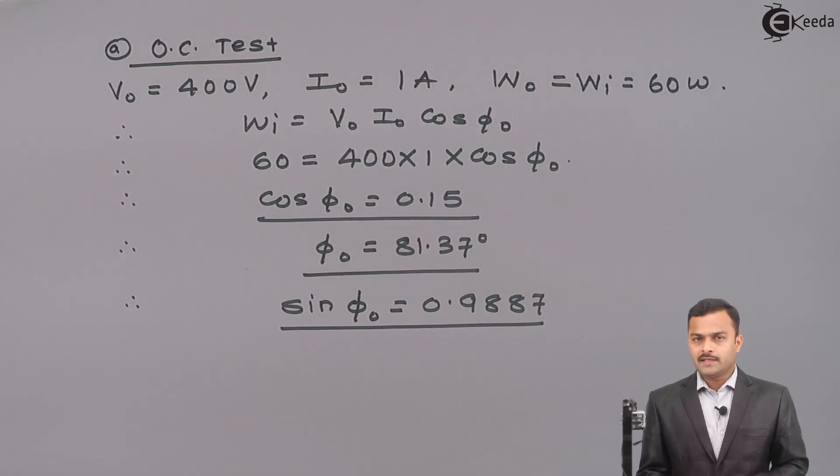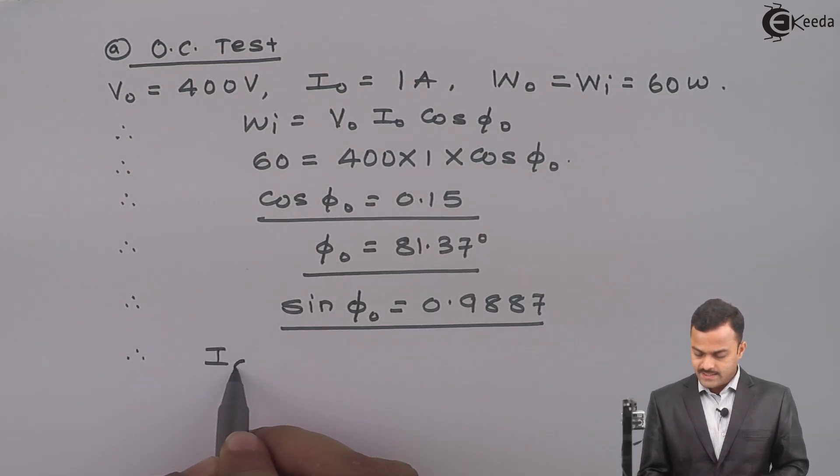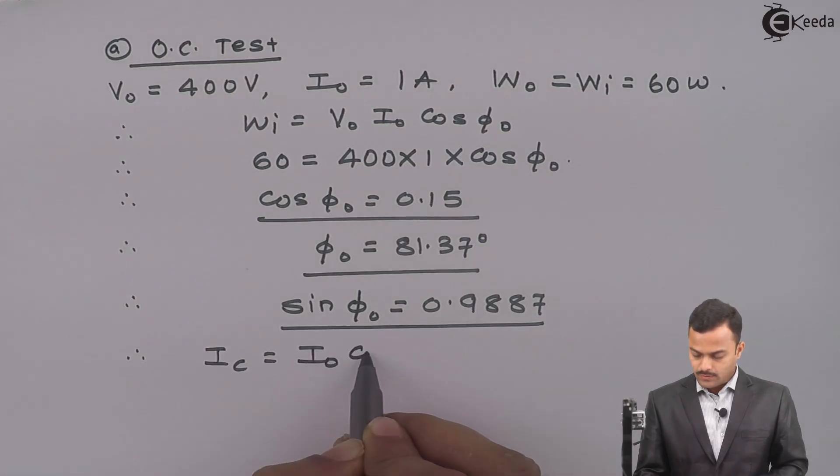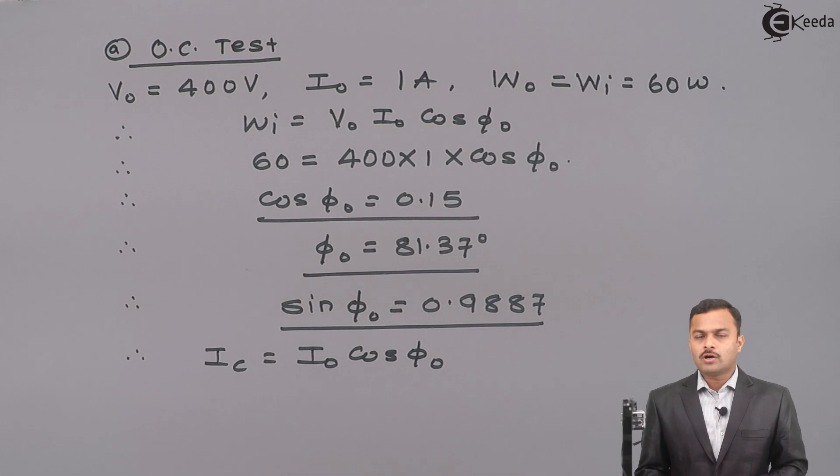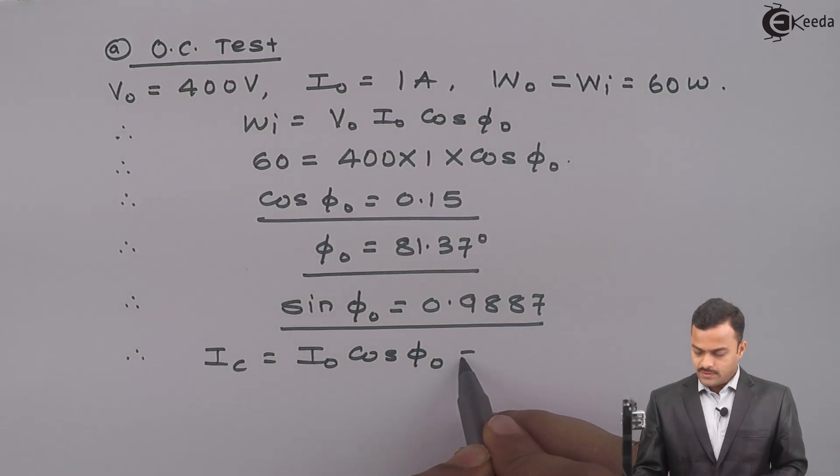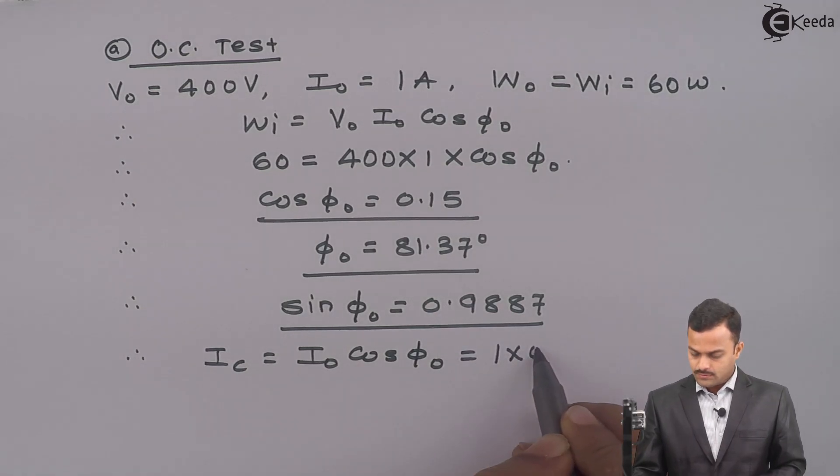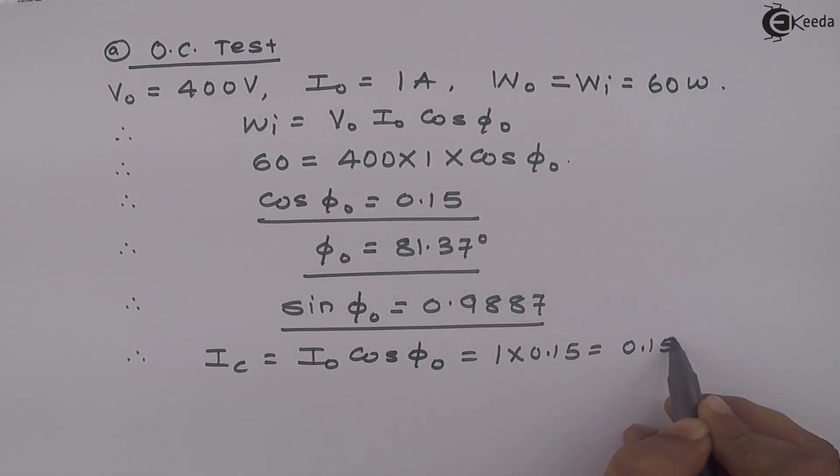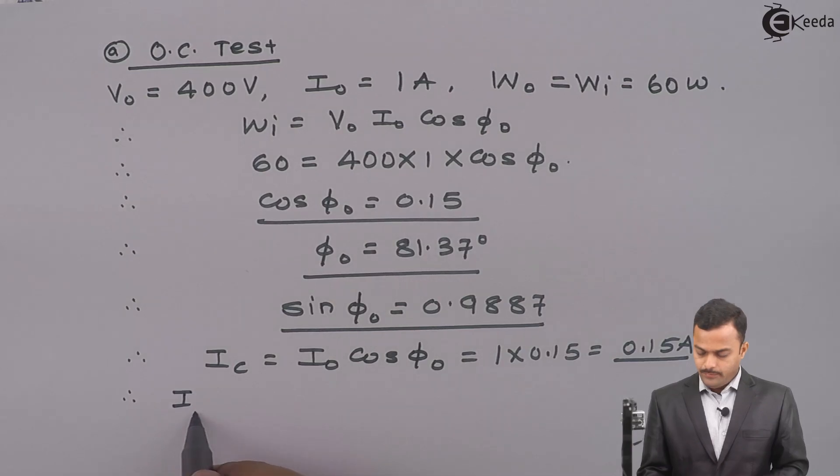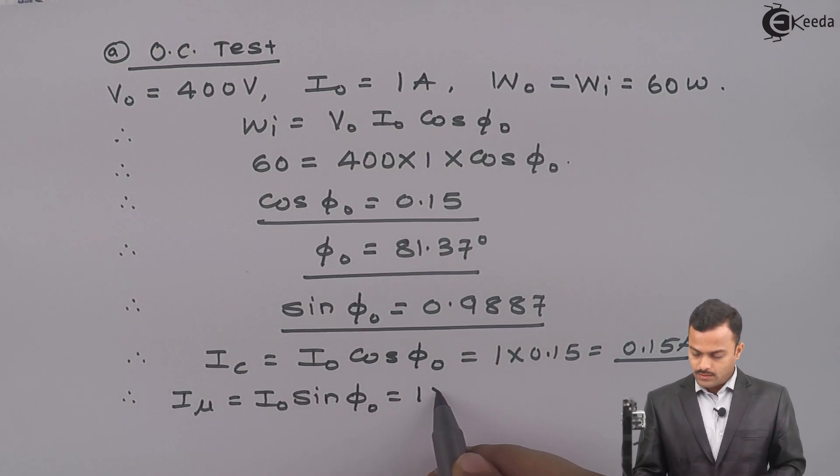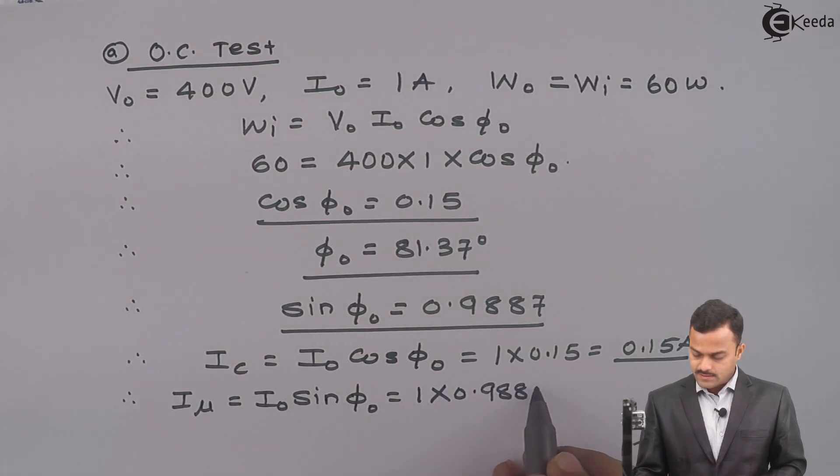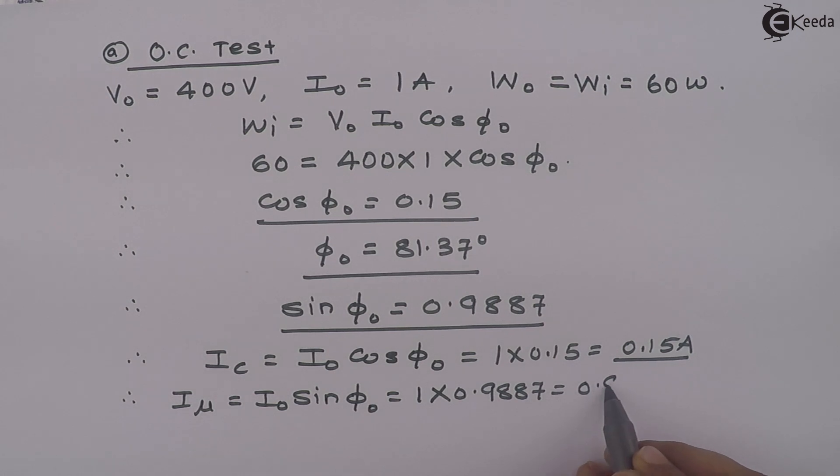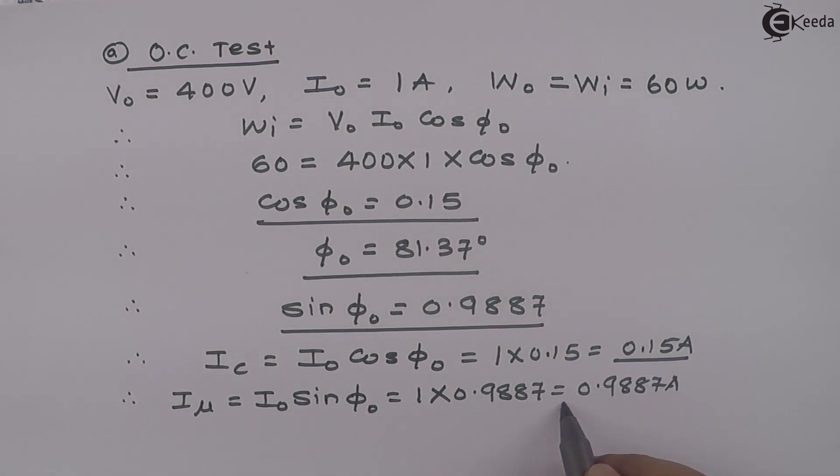We know no load primary current I0 has two components. One is IC that is given by I0 cos φ0 which is nothing but core loss component of no load primary current and that is passing through RC. So, this will give you answer 1 multiplied by 0.15, nothing but 0.15 ampere. Similarly, Iμ is the magnetizing component of no load primary current given by I0 sin φ0 equal to 1 multiplied by 0.9887 equal to 0.9887 ampere.